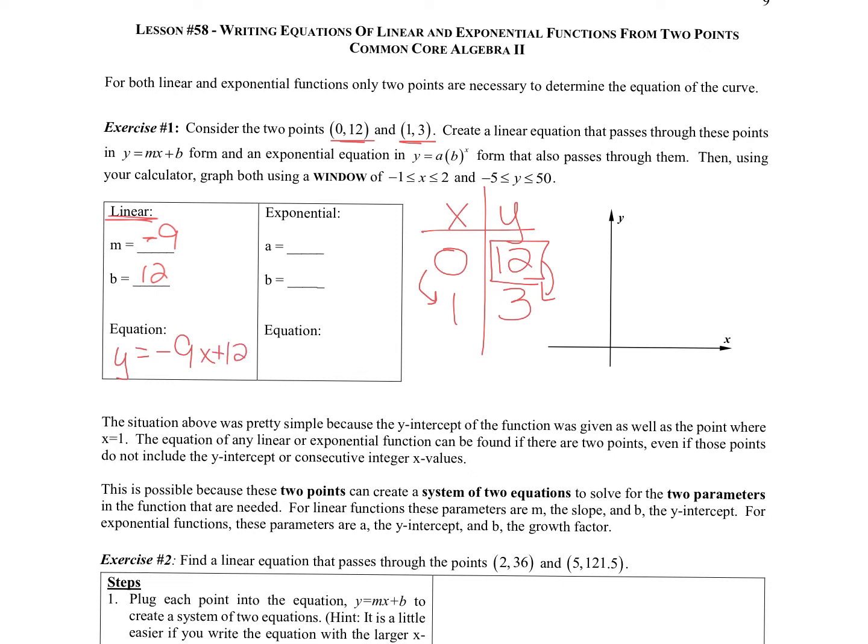For the exponential function the a value is also in this case our y-intercept, that number that goes in the front in this form, so that is 12. And b here, that's our multiplier number. To go from 12 to 3 we can do 3 divided by 12. The second number divided by the first number will give us that change number. So this is going to be 1/4 or 0.25. I'm going to use 1/4 here. So the exponential equation that will bring us through those two points is 12 times (1/4) to the x.